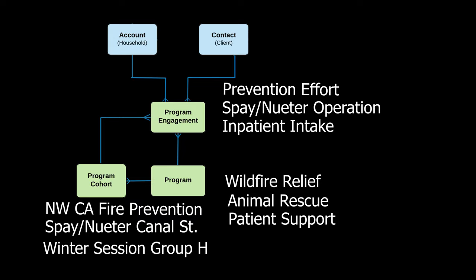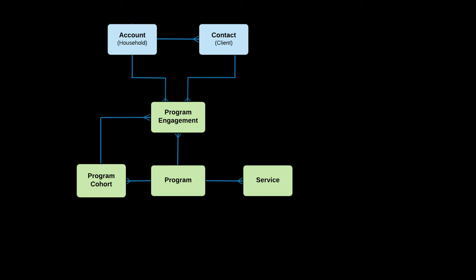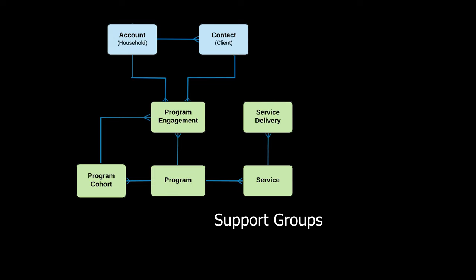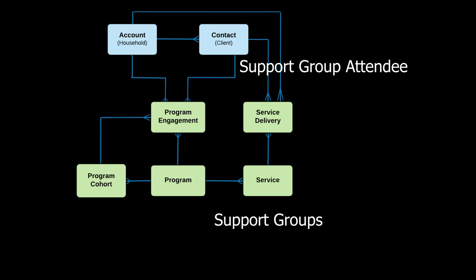But what about recording our day-to-day work? The Service object records the activities that make up our programs. Services in a cancer support program, for example, might include support groups and caregiver education. The Service Delivery object records specific instances of a service that was delivered, including the service recipient and how much was delivered — for example, Alex attended a support group for one hour today.